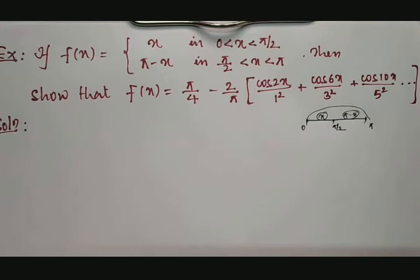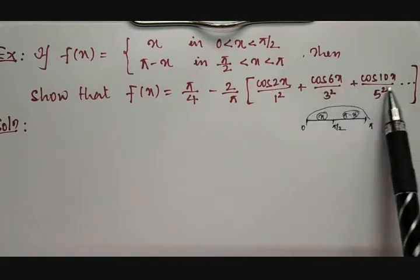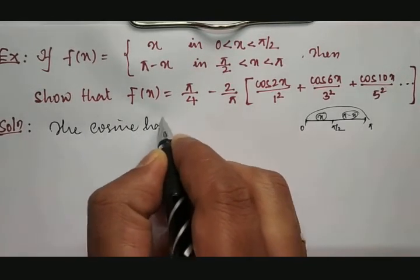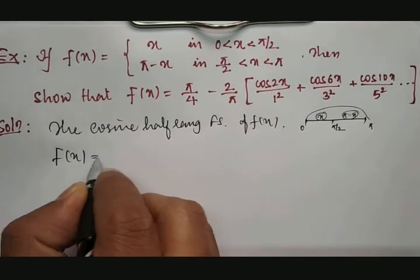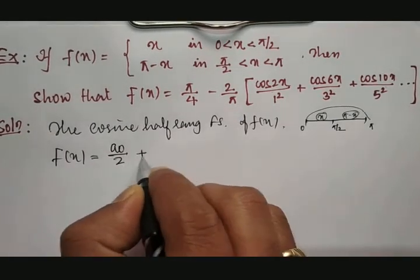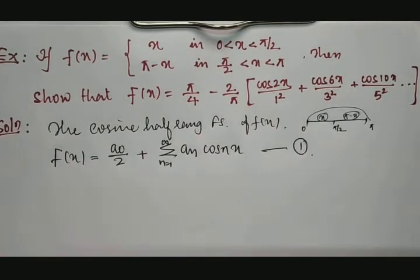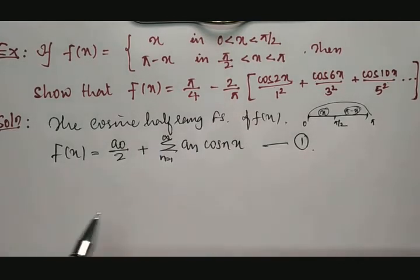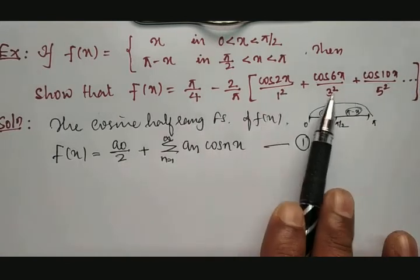It is not mentioned whether we need to obtain a Fourier half range sine series or Fourier half range cosine series. If you see the required expansion, we got cosine terms. It is understood that we need to calculate the Fourier cosine half range series.